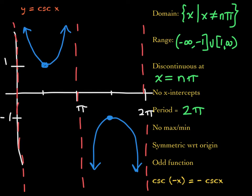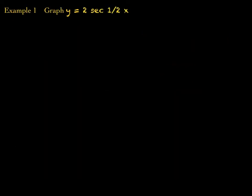There is no maximum or minimum because these branches rise and decrease indefinitely. This function is symmetric with respect to the origin, which means it's an odd function. So cosecant of negative x equals negative cosecant of x — if you negate the input, you negate the output.